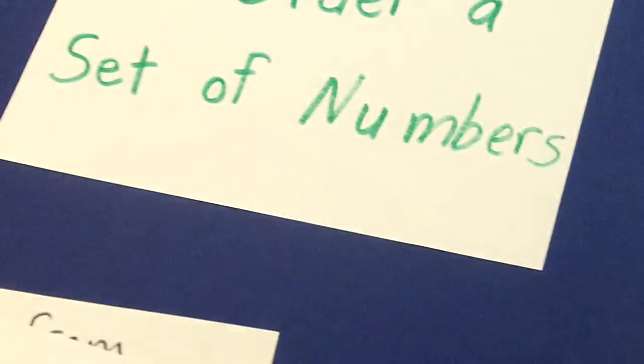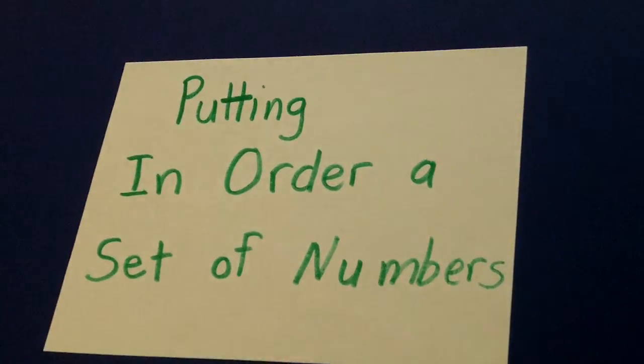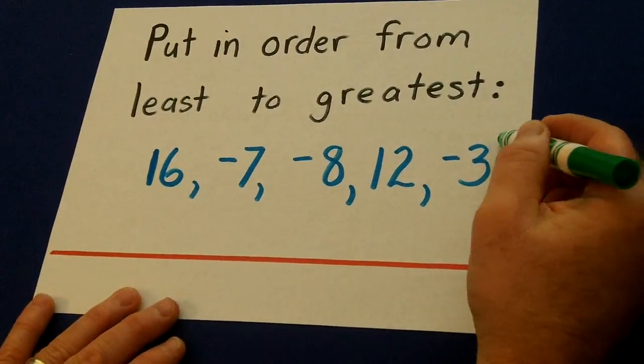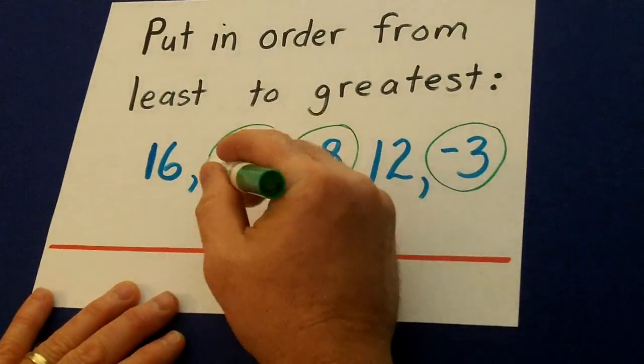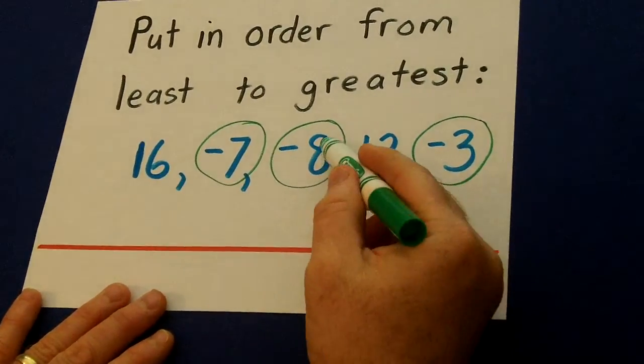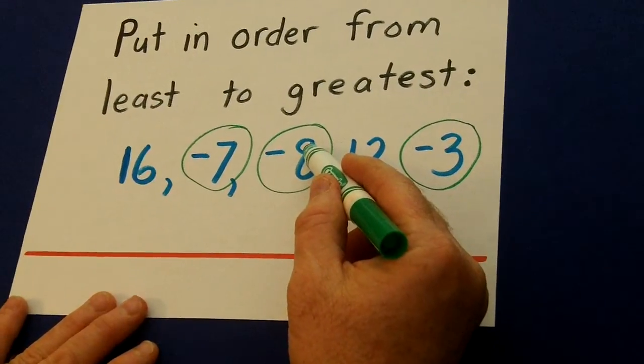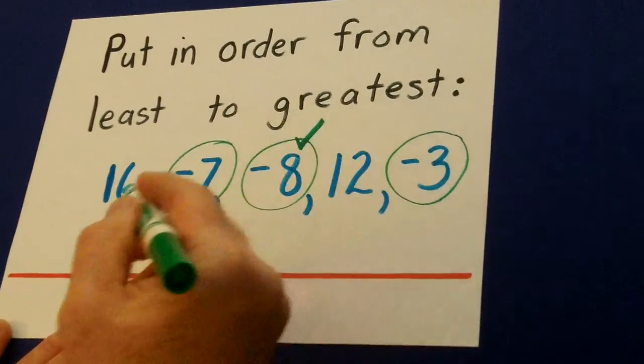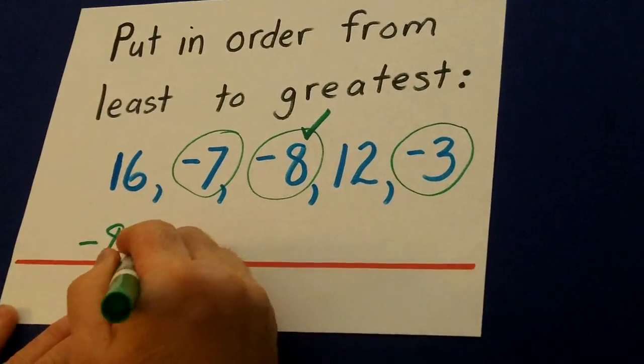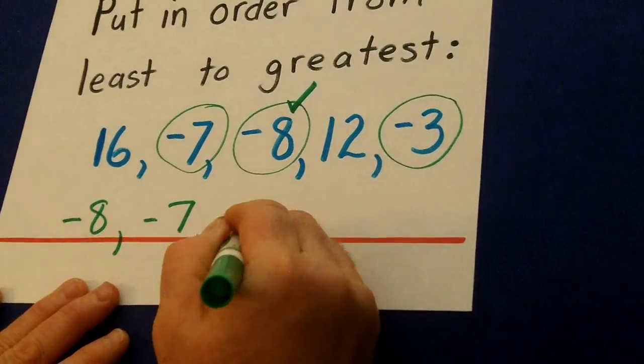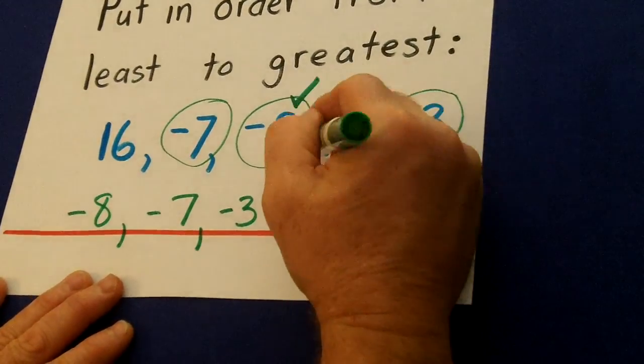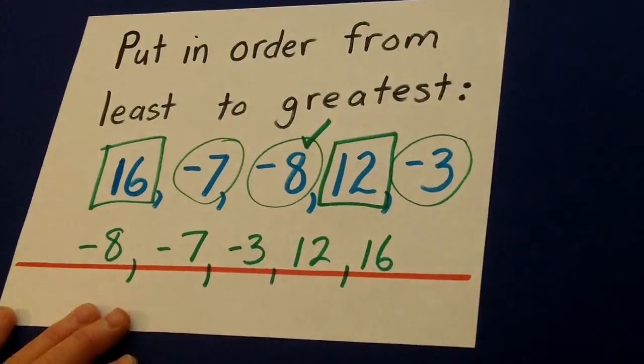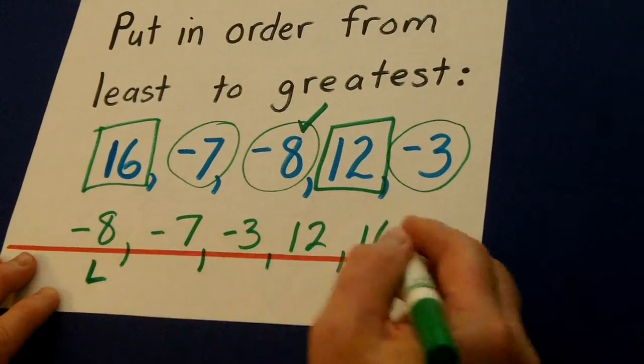And the last concept is, putting in order a set of numbers. So, let's look at these numbers here. Sometimes what I like to do, I circle all the negatives. And I know that the bigger the number of a negative, like 8, the colder or smaller it's going to be. So, the smallest or least number here is negative 8, negative 7, negative 3. And then, we have two positive numbers, 12 and 16. So that's how we would put them in order, from least to greatest.